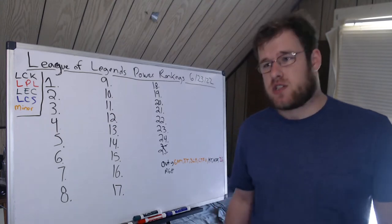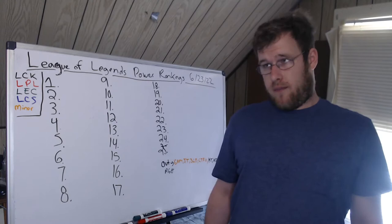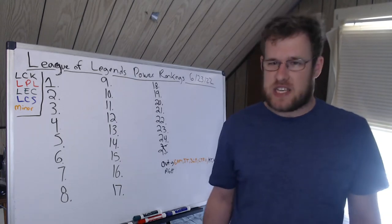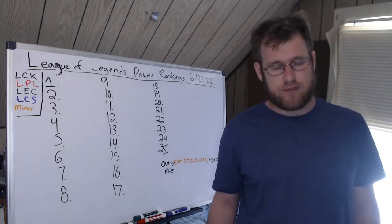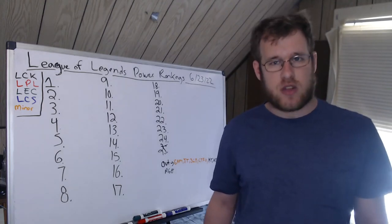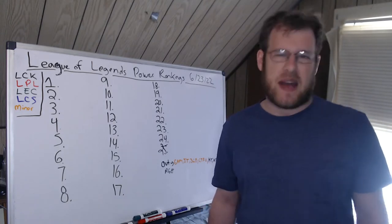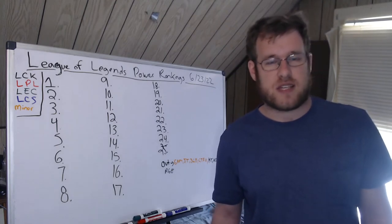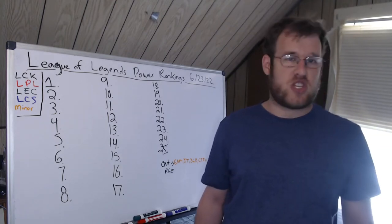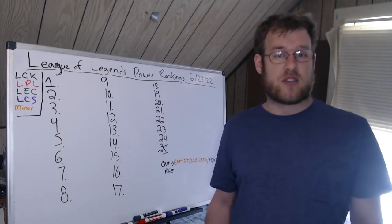In this week's power rankings you'll notice that J Team's not in here. Saigon Buffalo, GAM, and Flying Oyster—those four teams I had in there last week because they are the best teams right now in the smaller regions, PCS and VCS respectively.